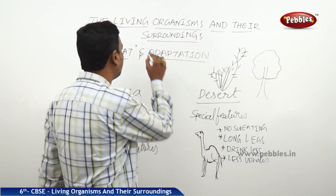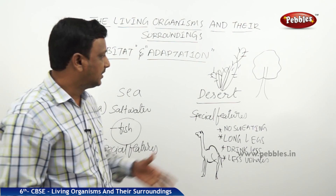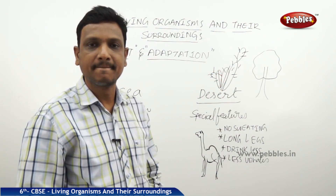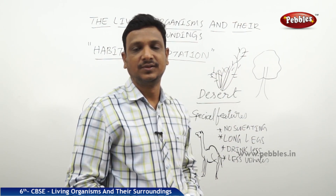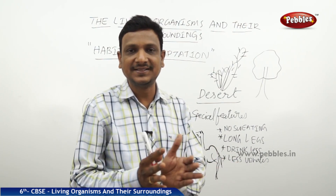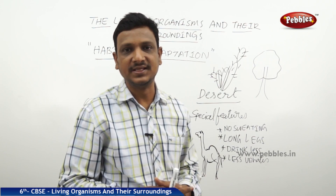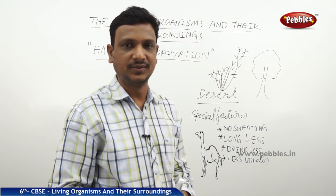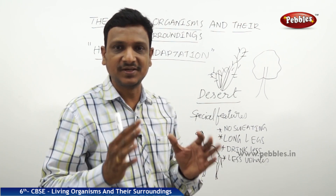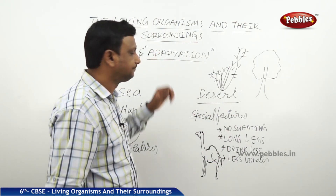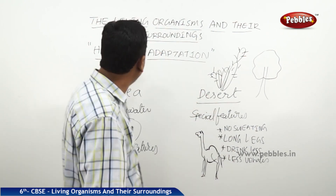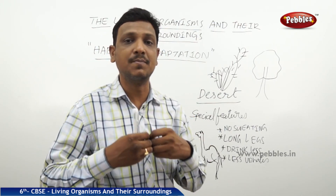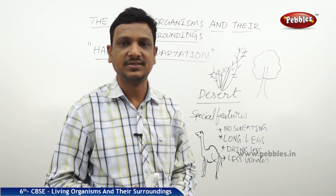All organisms, to live in their habitat, will be developing some special features, or they possess some habits to live in that particular habitat. Possessing such special features is called adaptation. Here you see that the cactus has no leaves - the leaves are turned to spines. This is a special feature. The stem of the cactus is turned into a thick, succulent, watery, flat-shaped organ. Showing such special features to live in a particular habitat is called adaptation.